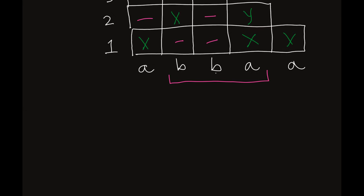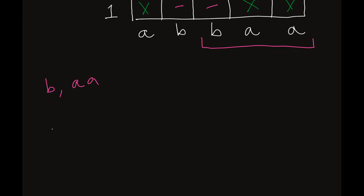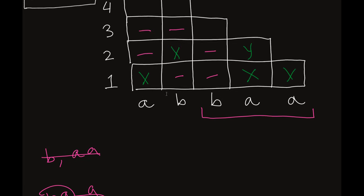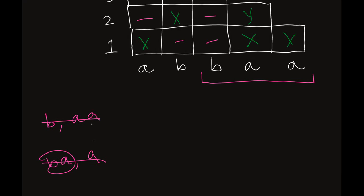Now we're moving on to our next substring of length three, which is also our last one: BAA. This can be split as B and AA, or as BA and A. We know we have no single Bs, so that won't work. And we don't have BA in our grammar either. So we put a dash through that. There are no substrings of length three produced by this grammar, at least in this particular word.